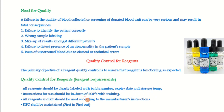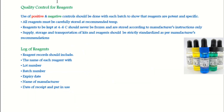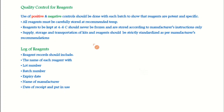Instructions for use should be in the form of SOPs with training. All reagents and kits should be used according to the manufacturer's instructions. The FIFO rule — First In, First Out — should be applied to both reagents and blood components. To ensure reagent quality, positive and negative controls should be done with each batch to show that reagents are potent and specific. All reagents must be carefully stored at the recommended temperature. Reagents to be kept at 4 to 6°C should never be frozen. Supply, storage, and transportation of kits and reagents should be strictly standardized per manufacturer instructions.